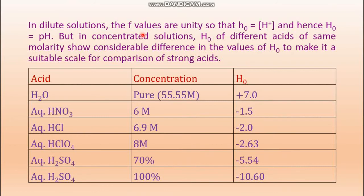In dilute solutions, the activity coefficients f become unity, so h₀ reduces to [H⁺] concentration, and hence H₀ equals pH. So for dilute solutions, Hammett's acidity function and pH are the same. But in concentrated solutions, H₀ of different acids at the same molarity shows considerable difference, making it a suitable scale for comparing strong acids — something pH cannot do for highly concentrated acids.